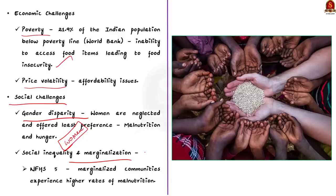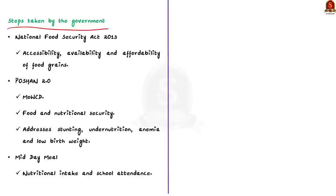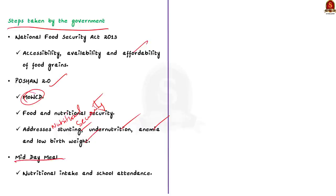These are the reasons for India's hunger paradox and why India is not able to achieve SDG Goal 2 — zero hunger — despite being self-sufficient in food production. Now for the second part of the question — steps taken by the government: the National Food Security Act 2013 addresses food insecurity by ensuring accessibility, availability, and affordability of food grains. POSHAN 2.0 is an umbrella scheme under the Ministry of Women and Child Development that addresses food and nutritional security, aiming to address stunting, anemia, and low birth weight.